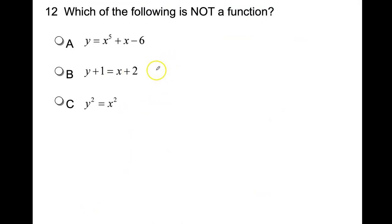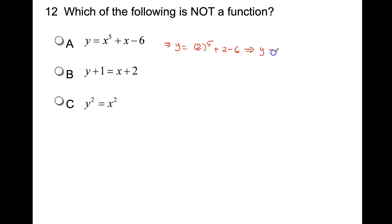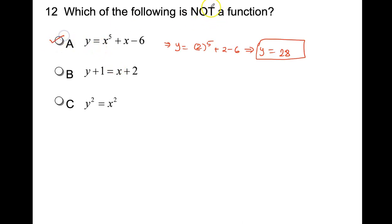Which of the following is not a function? For y equals x to the power 5 plus x minus 6, taking x equal to 2 gives only one value of y equal to 28 — so that is a function, not the correct choice. For y plus 1 equals x plus 2, taking x equal to 2 gives y plus 1 equals 4, so y equals 3 — only one value of y, so that is also a function.